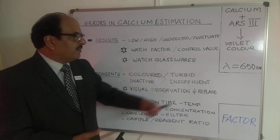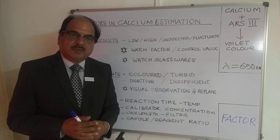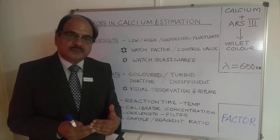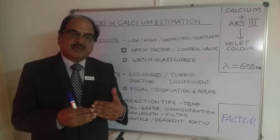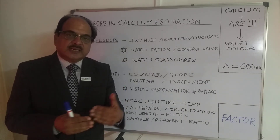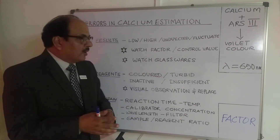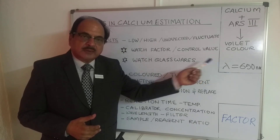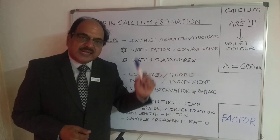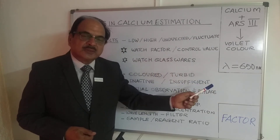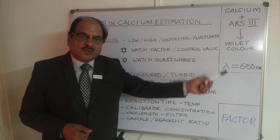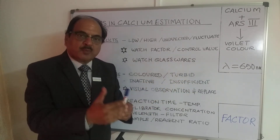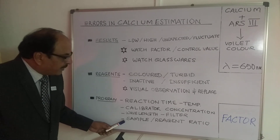Wavelength or filter selection is the next important issue. The recommended wavelength is 650 nanometers, but many analyzers do not have 650 nm available — some have 600, 610, 620, or 630 nm depending on the analyzer manufacturer. Any of these wavelengths above 600 nm is acceptable, but the key rule is that calibration and sample runs must be done on the same wavelength. If that is ensured, your factor will be consistent and results will be accurate.